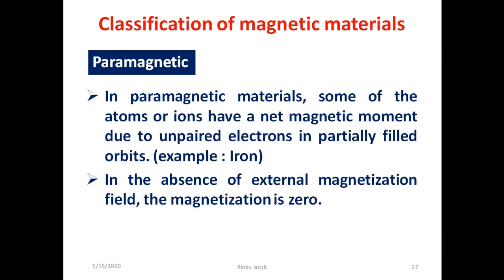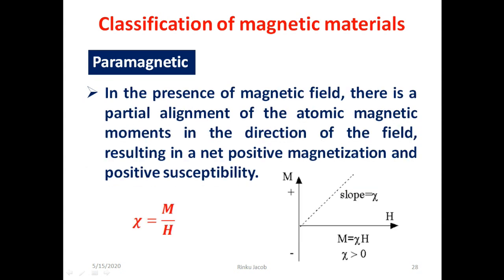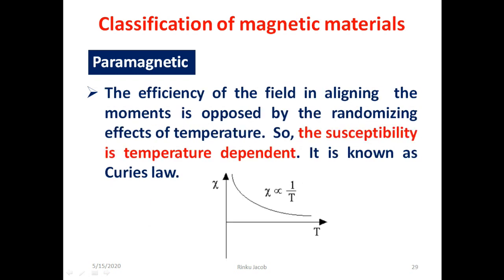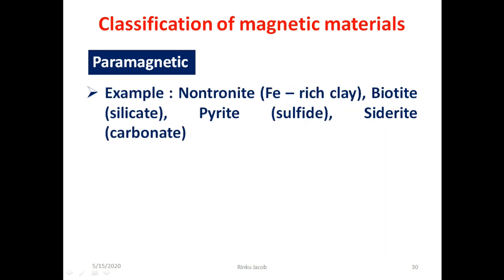In paramagnetic materials, some atoms or ions have a net magnetic moment due to unpaired electrons in partially filled orbits. In the absence of external magnetizing field, the magnetization is zero. In the presence of a magnetic field, there is a partial alignment of the atomic magnetic moments in the direction of the field, resulting in a net positive magnetization and positive susceptibility. The efficiency of the magnetizing field in aligning the moments is opposed by the randomizing effect of temperature, so the susceptibility is temperature dependent — this is known as Curie's law.